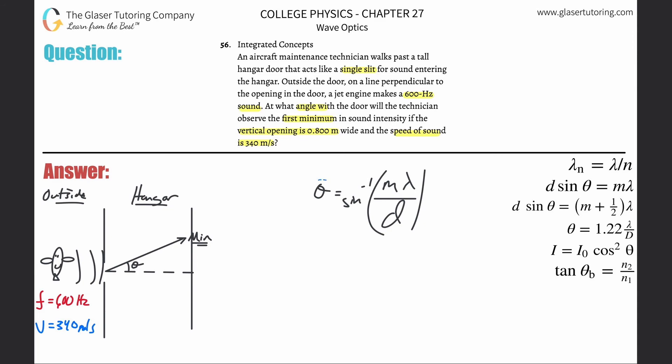So now in order to answer this question, we realize that we need to know three things: the order - well they told us the first minimum, so it's one. The wavelength - do we know the wavelength? No, they didn't tell us it directly, but they gave us the velocity and the frequency.